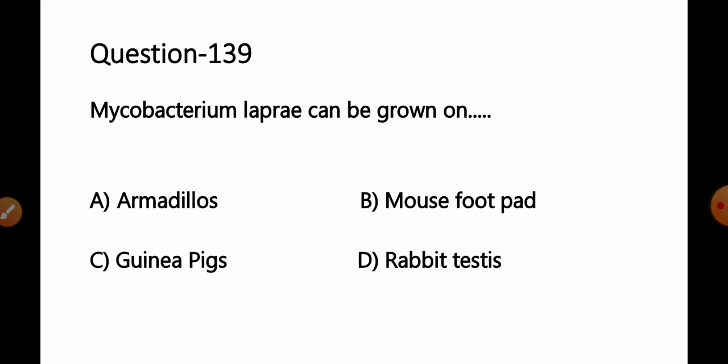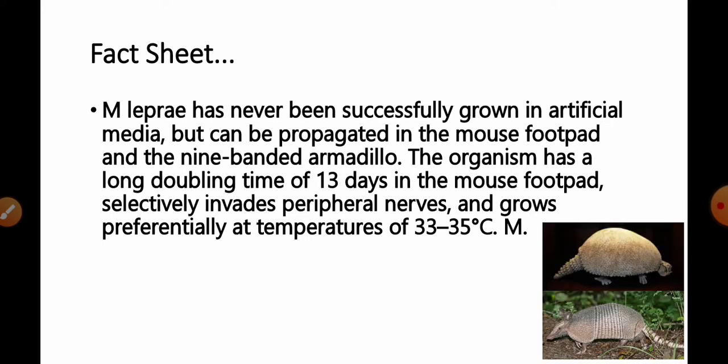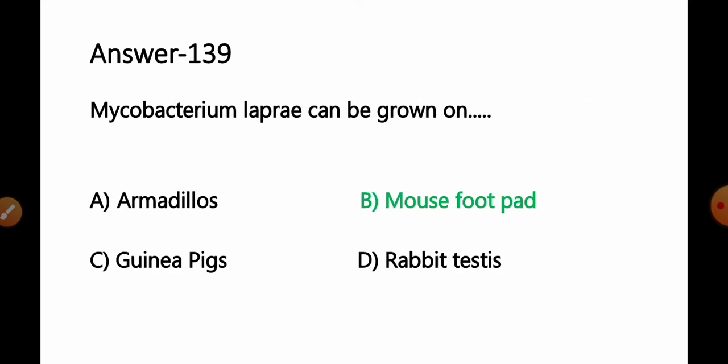Question 139: Mycobacterium leprae can be grown on: option A armadillos, B mouse foot pad, C guinea pig, D rabbit testis. Mycobacterium leprae has never been successfully grown in artificial media. It can be propagated in the mouse foot pad and in nine-banded armadillos. The organism has a long doubling time of 13 to 14 days in the mouse foot pad, selectively inverts peripheral nerves, and grows preferentially at 33–35°C. Option B mouse foot pad is the most appropriate correct answer.